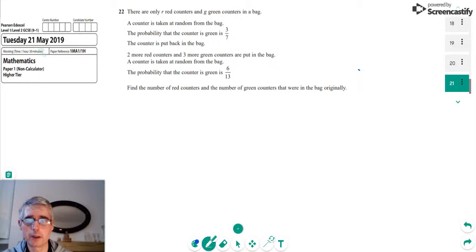I'm starting at actually the hardest question on here, which is question 22. So this is a probability question. Given the condition that in a bag there's red counters and green counters, we're told that the probability of getting a green counter is 3 over 7.